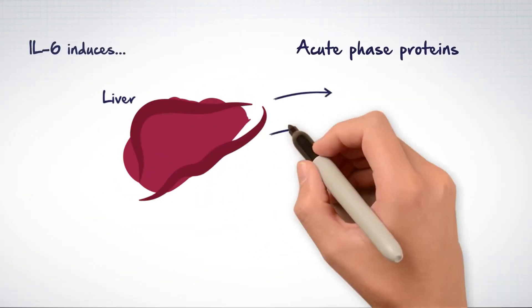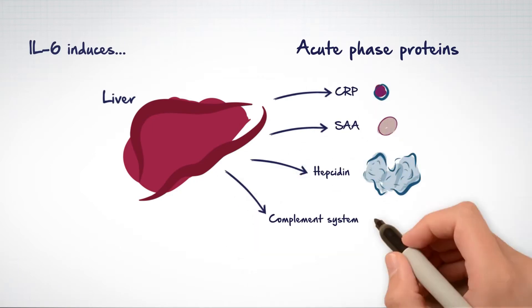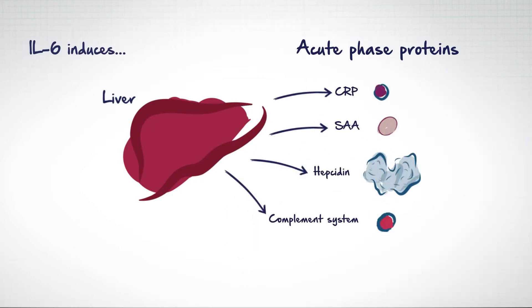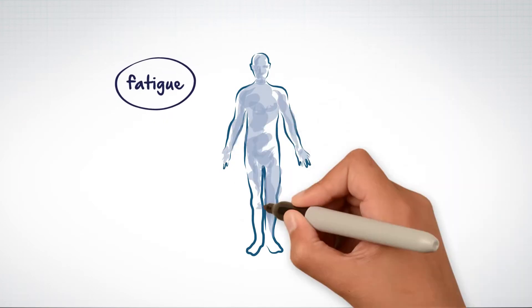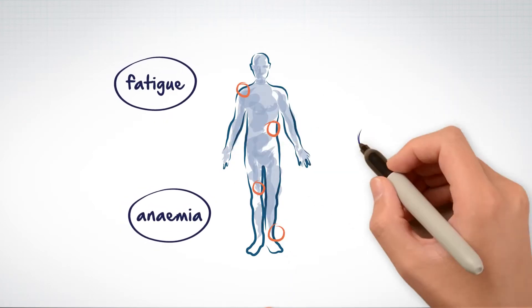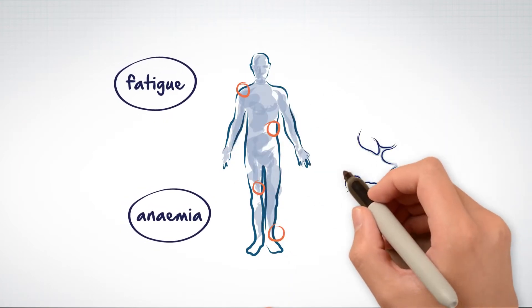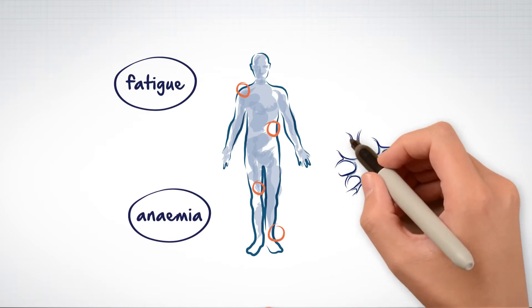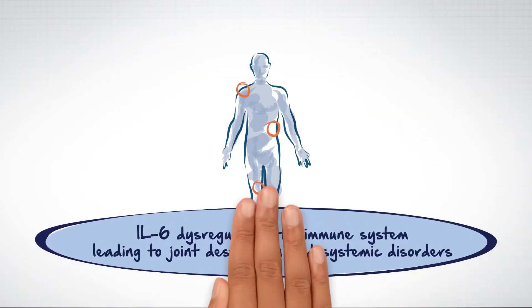IL-6 is a main inducer of acute phase proteins produced by the liver, which contribute to systemic disorders including fatigue and anemia. In addition, IL-6 can sensitize peripheral nerves and thereby contribute to pain.